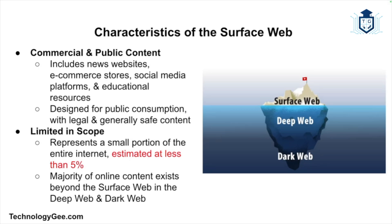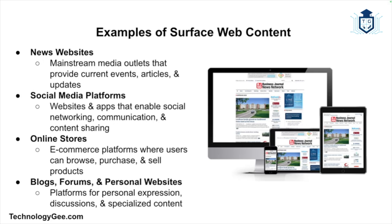The surface web is limited in scope. While it contains a vast amount of information, it only represents a small fraction of the entire internet — estimates suggest it makes up about five percent or less of the total content available online. Examples of surface web content include news websites like CNN, BBC, and the New York Times; social media platforms like Facebook, Twitter, and Instagram; and online stores like Amazon, eBay, and Etsy.